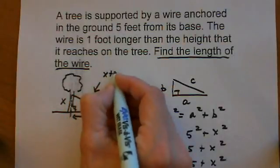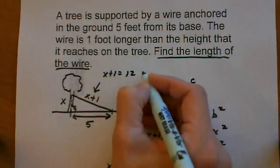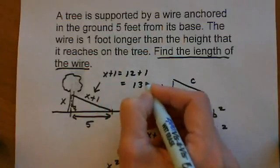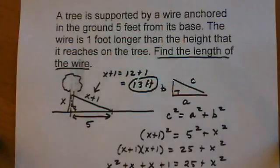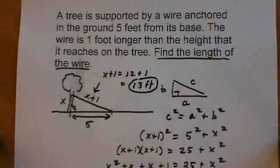So x + 1 = 12 + 1 = 13. That's 13 feet. The length of the wire is 13 feet.